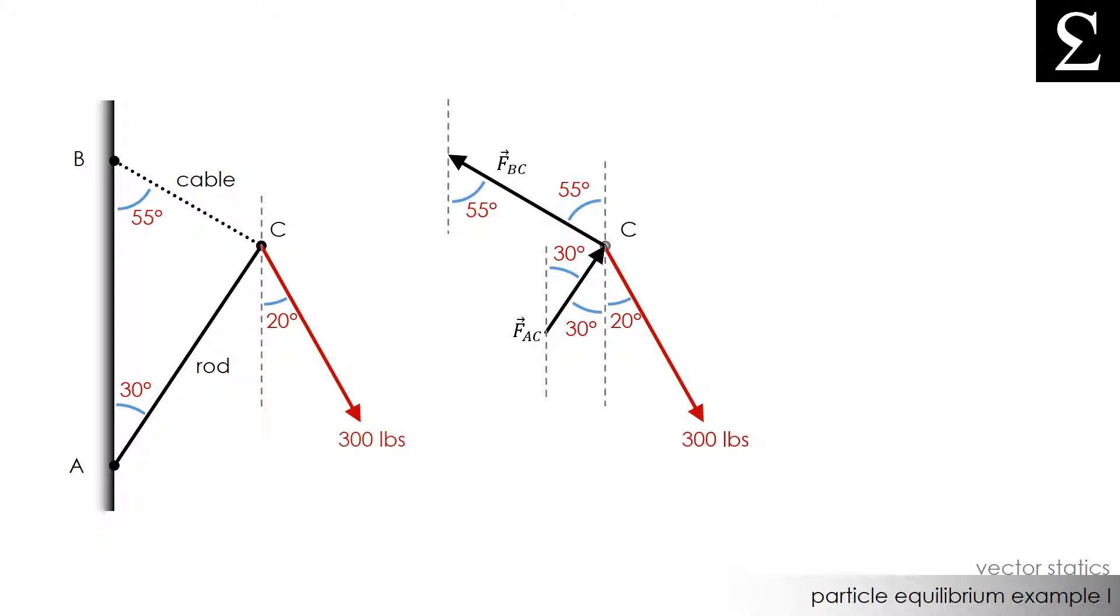Well in order for this to happen the vectors that we have drawn should be applied in a tail-to-tip fashion and the last vector added should end up back at particle C. In other words the vectors we have in our system need to close back at point C.